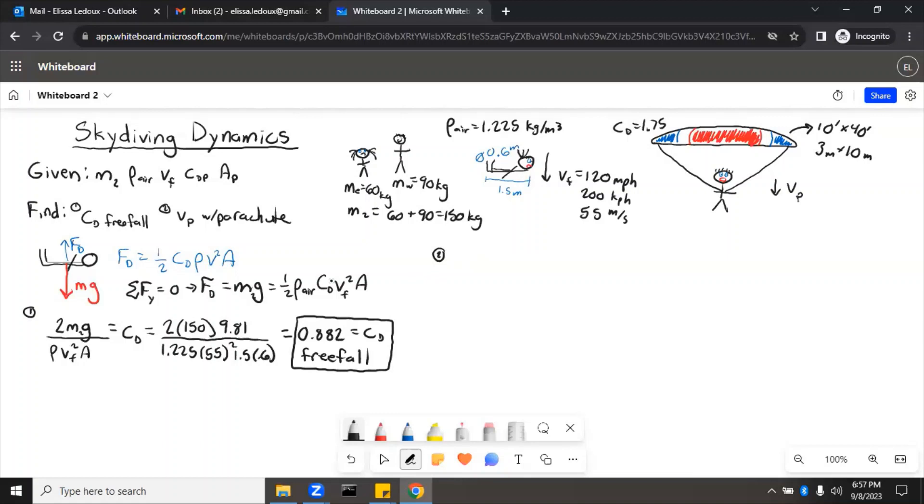So we can use our same formula, knowing still that the weight has to equal the drag force. So our free body diagram actually is really similar, even though we're pointed in a different direction, still the drag force that is going up into the parachute. So we have parachute, drag force here, and then person. And then we still have the weight going down.